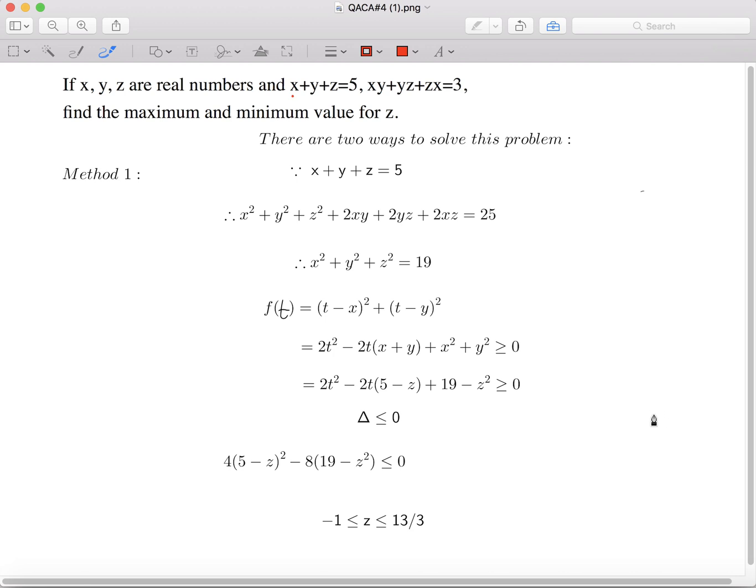There are two ways to solve this question and today I'm going to present you the first way. We know that x plus y plus z is 5, so if we square both sides, we can easily get that x plus y plus z whole thing squared is 25.